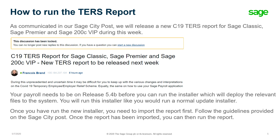As communicated in our SAGE City post, we will release a new C19 TERS report for SAGE Classic, SAGE Premier and SAGE 200C VIP during this week. Your payroll needs to be on release 5.4B before you can run this installer, which will deploy the relevant files to the system. You will run this installer like you would run a normal update installer.